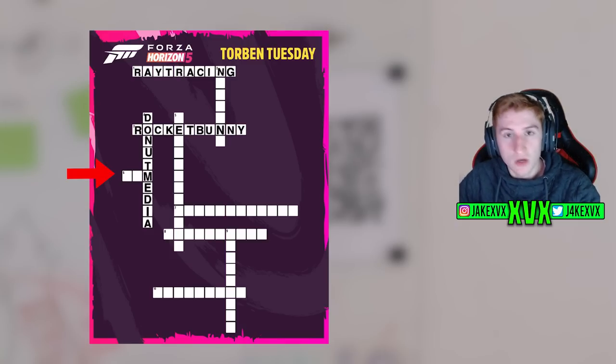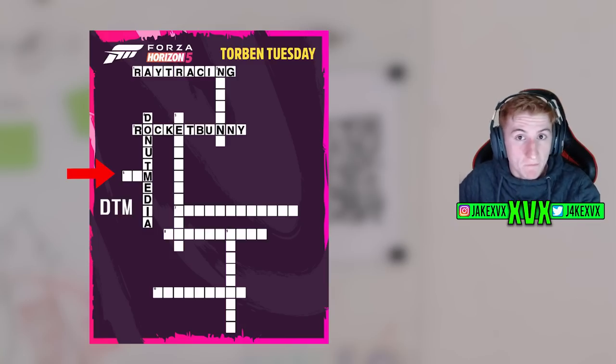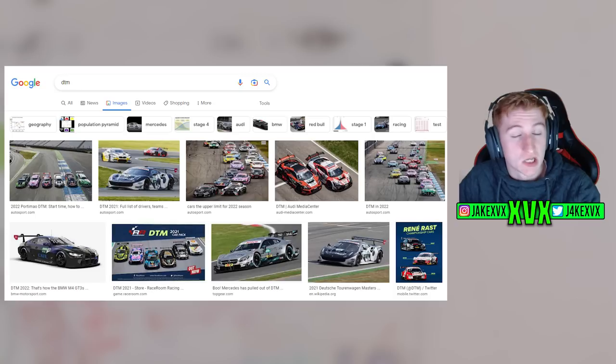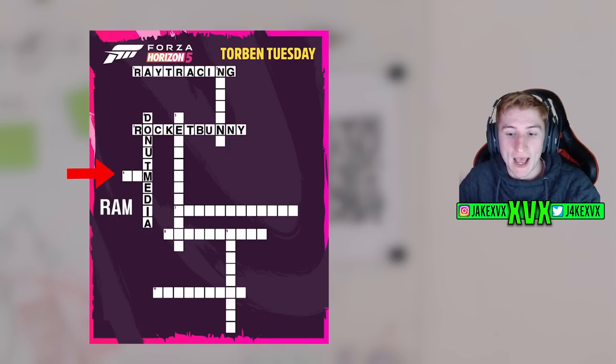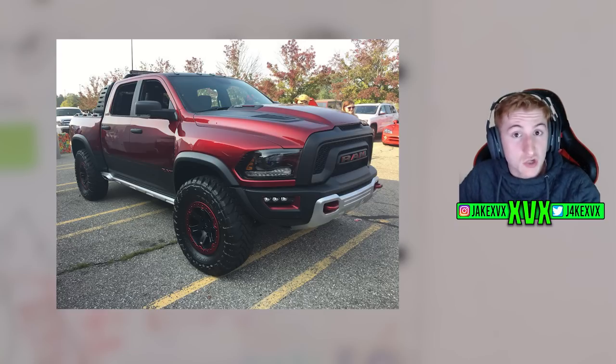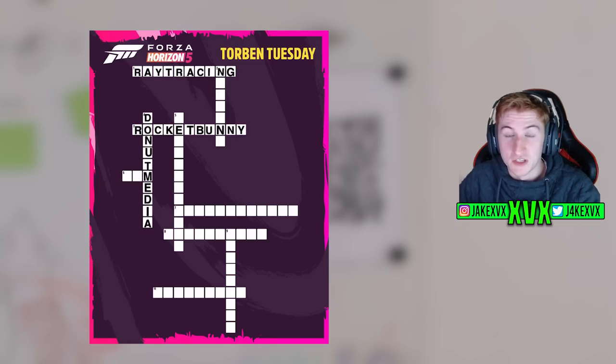This one over here, which is I believe six across something something M. This could say DTM. DTM is sort of a German touring car series, so German touring cars might be coming. It could just say RAM, R-A-M. So maybe that's a hint at the RAM Rebel TRX coming to the game. There is a lot of possibilities of what all of these columns could be.